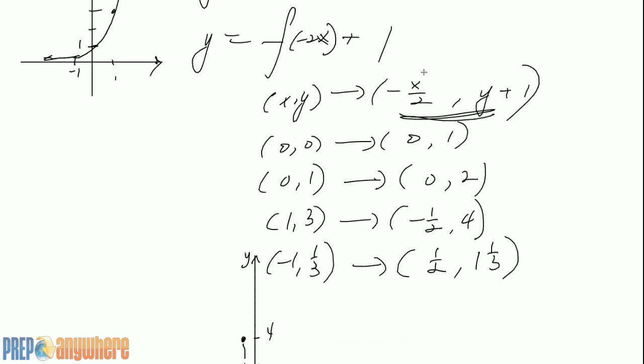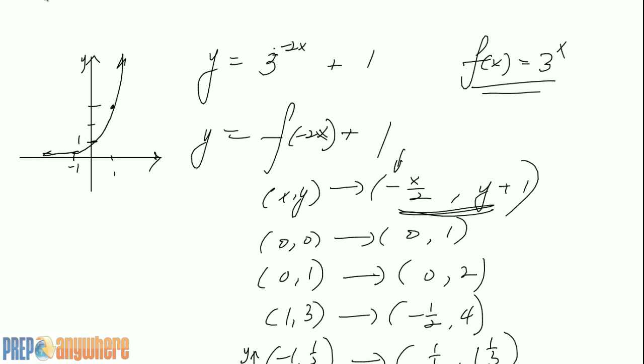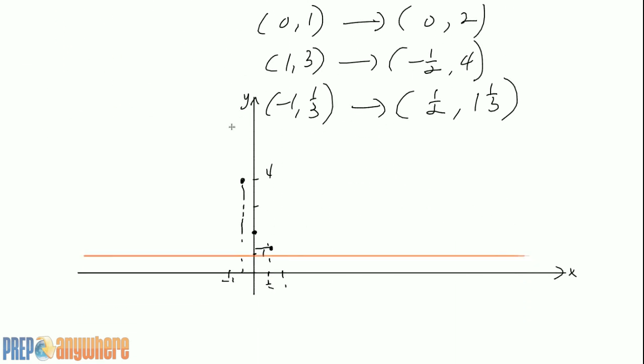From our transformation lecture, what does a negative do to the x value? Reflection on the y-axis. If it's negative on the y, it's reflection on the x-axis. So if you reflect this on the y-axis, look, it looks like this, doesn't it? If you follow these points here, it looks like that.